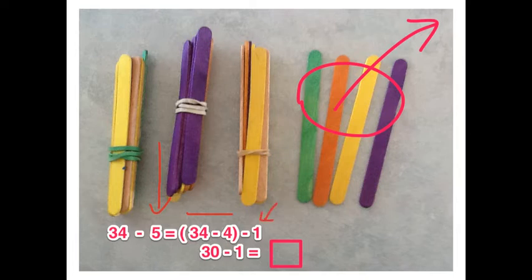as the second part of my problem. So I take 34, take away 4 and I'm left with 30 and 1 more still to take away.